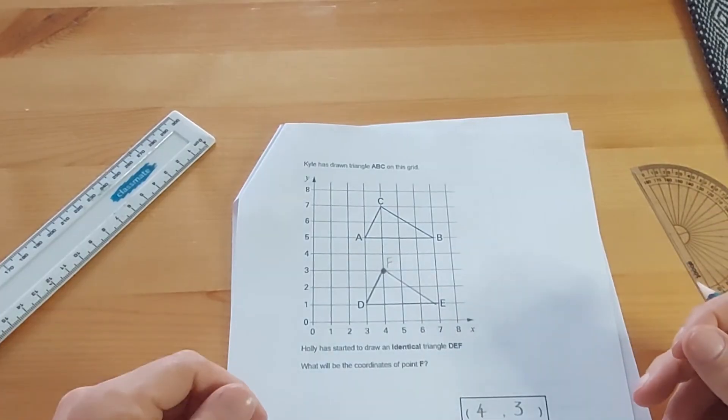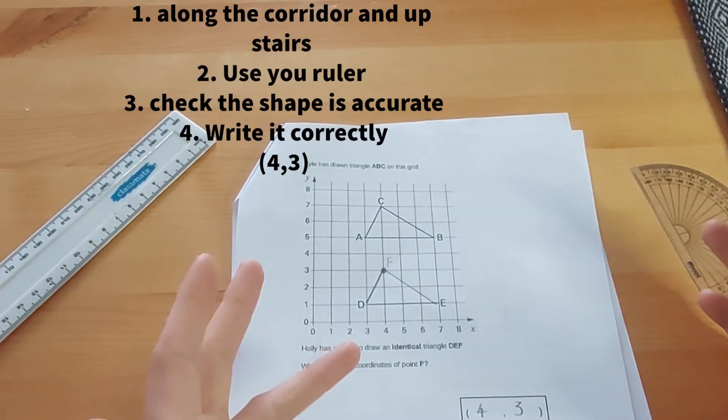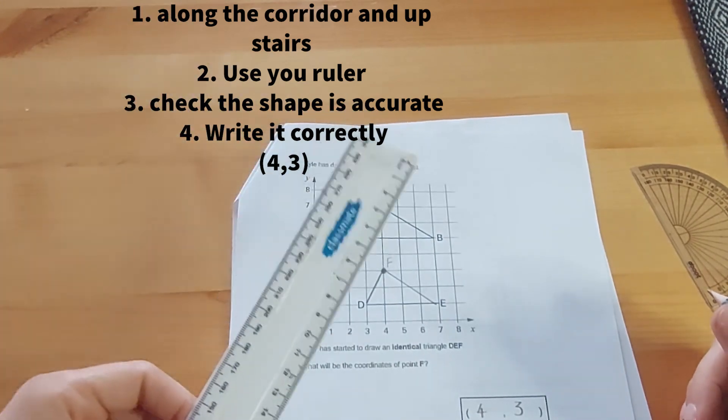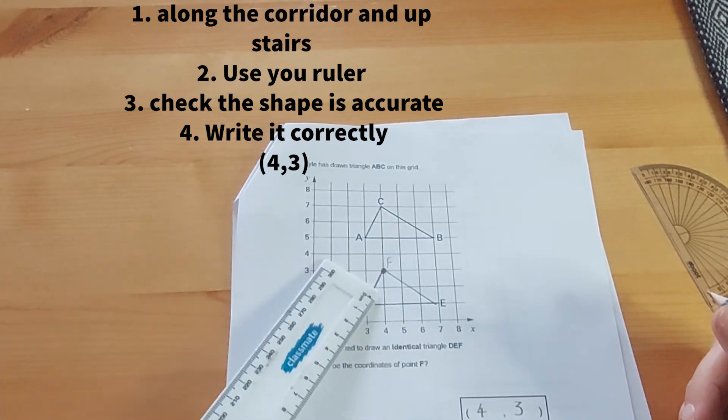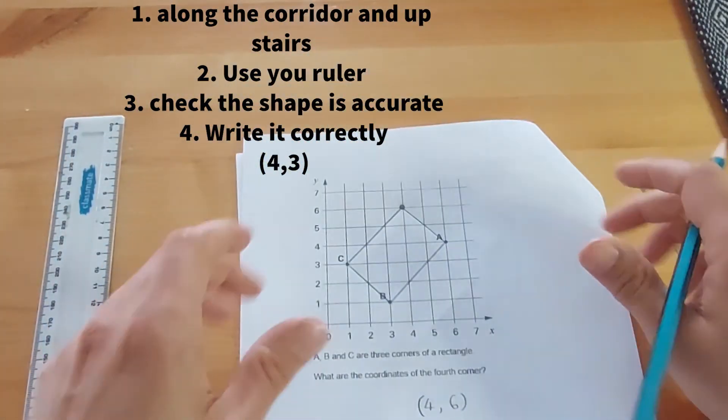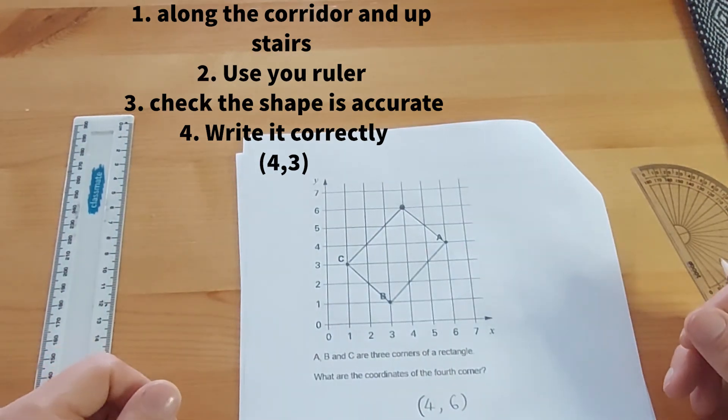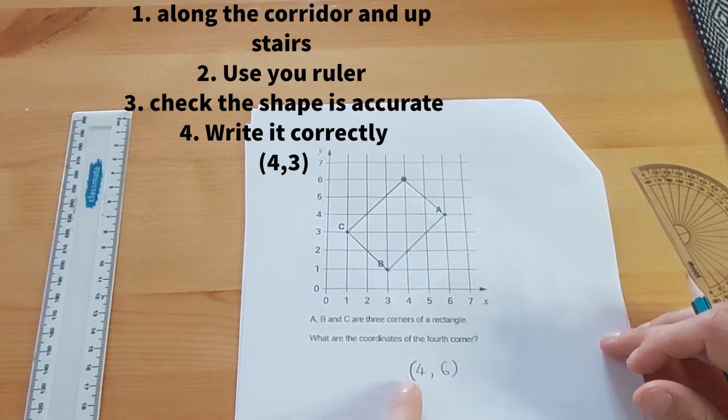So what do we need to know about coordinates? One, the rule is along the corridor, up the stairs. Two, use our ruler when trying to answer coordinate questions to make sure the shape looks accurate and looks the same, looks like the shape that we're being asked to make, in this case rectangle. And to remember when we're writing the coordinates, if the brackets and commas are not given, we have to have brackets around them and commas in between each number. Thanks for watching guys.